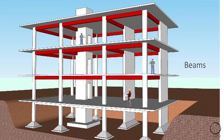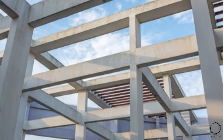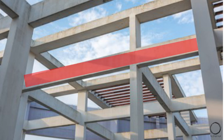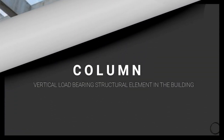Moving on, the next term is beam — a horizontal load-bearing structural element in the building. Here is an image where the red-highlighted supports are the beams, which are horizontal and directly support the slab. Here's another image also showing the horizontal beam supports.